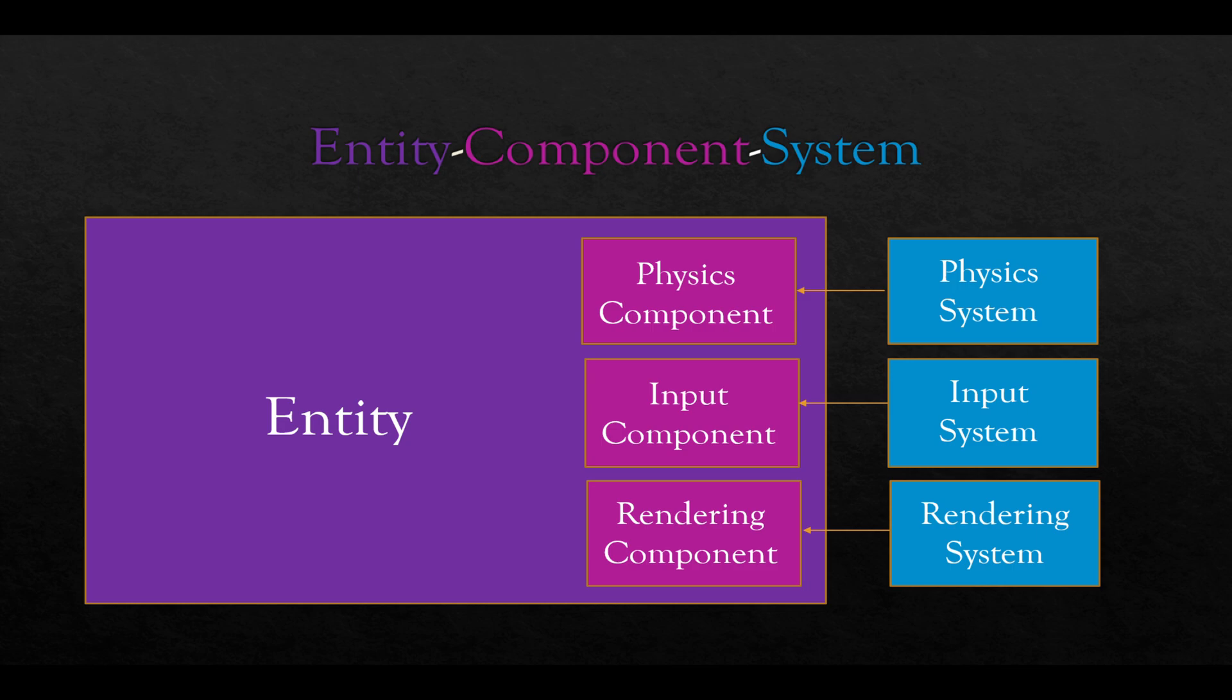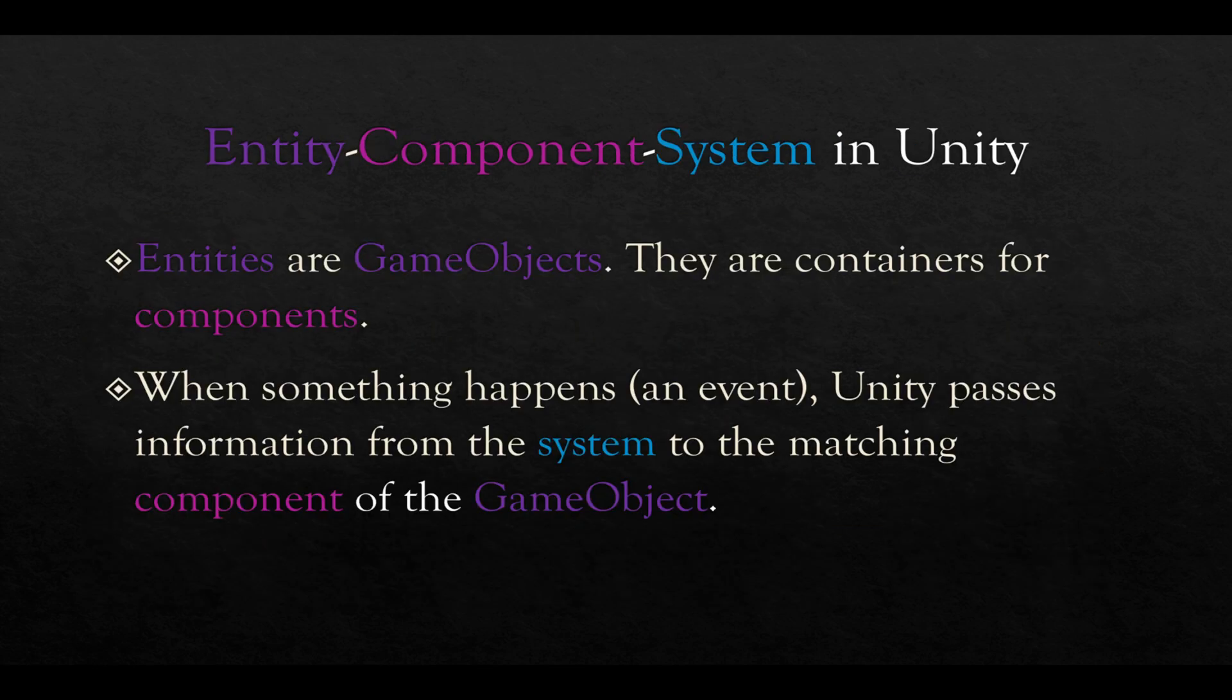Let's talk about how Unity views this model. In Unity, entities are called game objects. These are the default entities within Unity. They are containers for components. So game objects in Unity and components and systems.